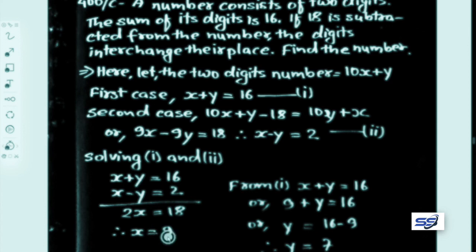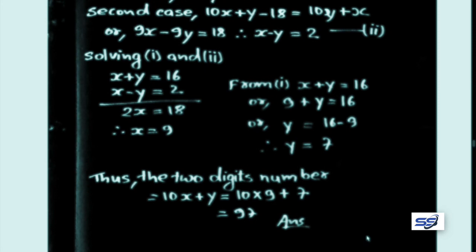With x equals 9 and y equals 7, the required two-digit number is 10x plus y equals 10 into 9 plus 7 equals 97. So 97 is our required two-digit number.